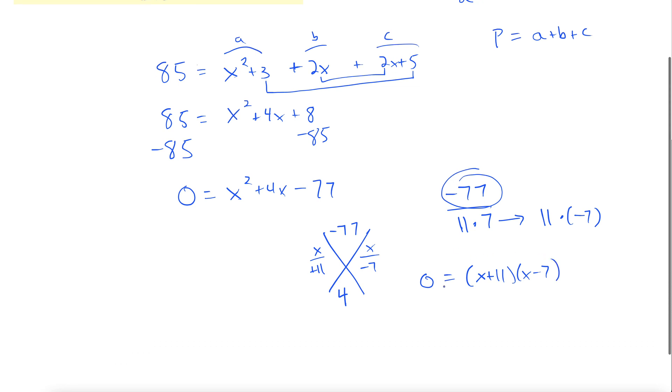Now we can use that zero factor property. x plus 11 equals 0, x minus 7 equals 0. Subtract 11 from both sides, x equals minus 11. Add 7 to both sides, x equals 7. Now these are lengths here, so we can't have a negative length at this point. So what we have here is x equals 7.